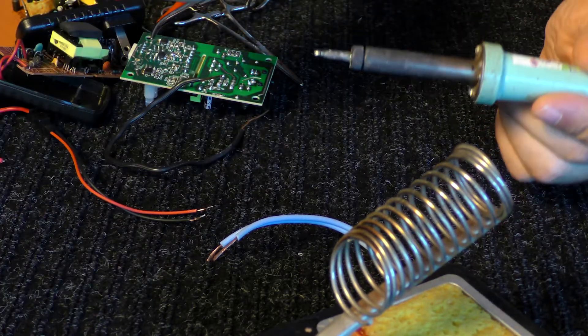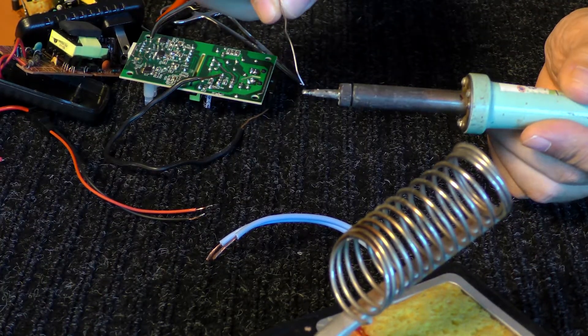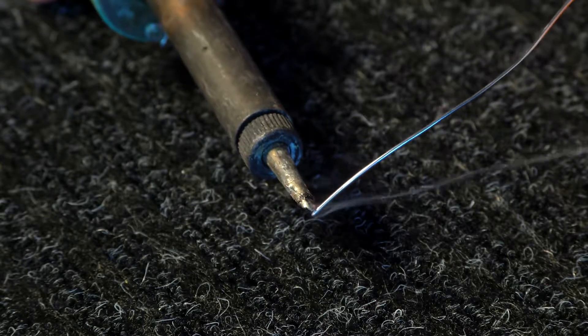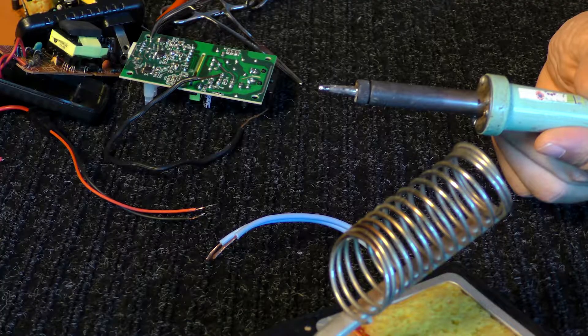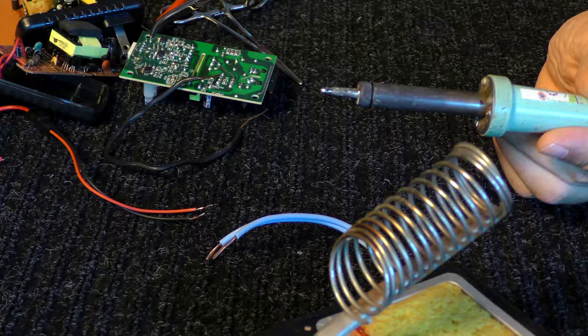Before we begin, we want to make sure the soldering iron is hot and reached its maximum temperature by putting a little solder on it. We can see it smoking and that's the resin burning, so now we're ready to begin soldering.